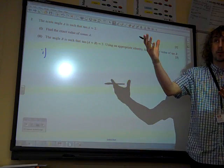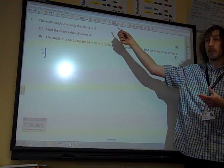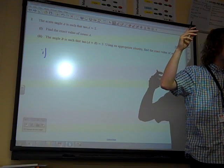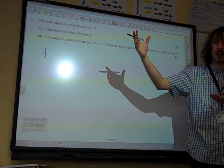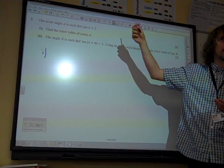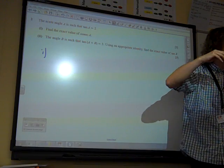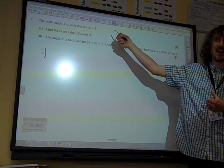So the opposite could be 4 and the adjacent could be 2. That would give you that angle. The opposite could be 7 and the adjacent could be 14. That's the wrong way round, isn't it? The opposite could be 7 and the adjacent could be 3.5. That would give you that angle.